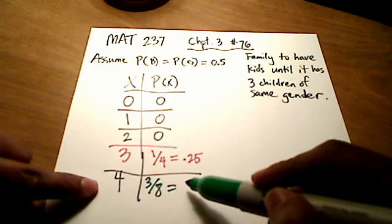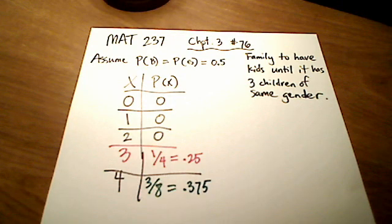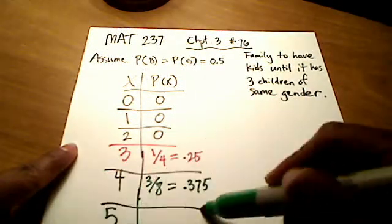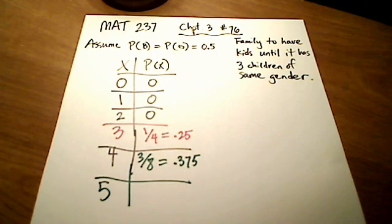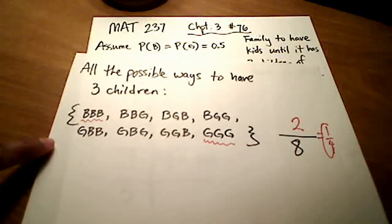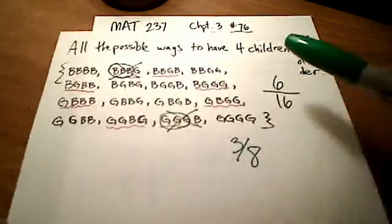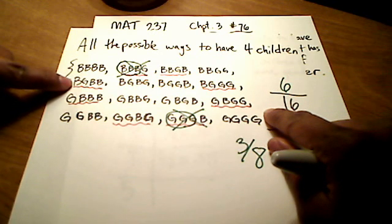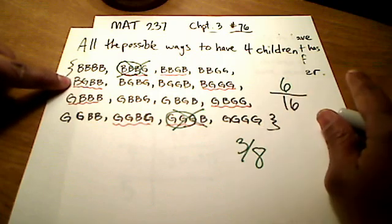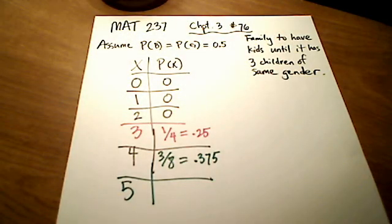So far: three children gives 0.25, four children gives 0.375. I'll let you figure out five children. Work out all possible ways to have five children, then rule out the ones already counted — cases where the first three are all boys or all girls, and also the four-child cases already counted here.